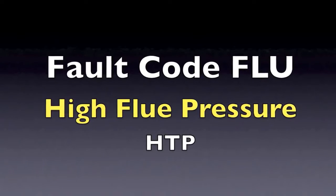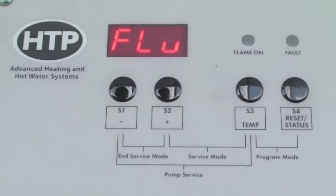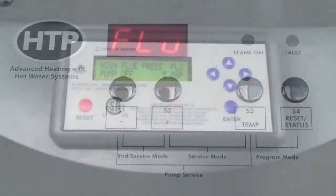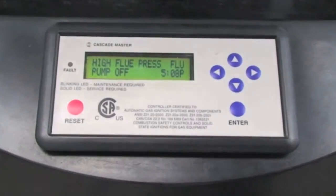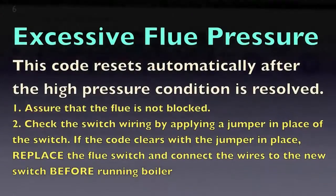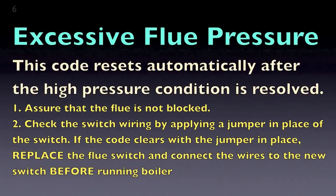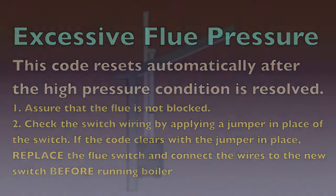If you are getting an FLU in the display, this indicates that there is excessive pressure in the exhaust vent. The switch is normally closed and opens when it sees pressure in the exhaust vent above an inch and a half water column. The unit will reset after 90 seconds to see if the blockage has been corrected.